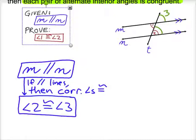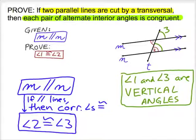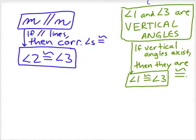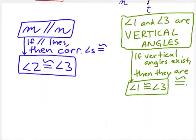Now we've established that 2 and 3 are congruent. Let's take a closer look at angles 1 and 3. Vertical angles aren't necessarily from the given information, but they can be implied because whenever lines intersect they form vertical angles, and we know that vertical angles are always congruent. So we've established that angles 1 and 3 are congruent. So: 1 and 3 are congruent, and 2 and 3 are congruent. By the transitive property, if 1 is congruent to 3 and 2 is congruent to 3, then 1 and 2 are congruent to each other.